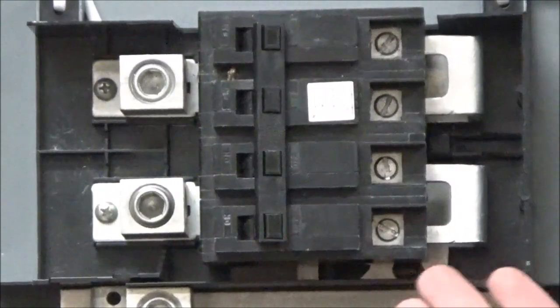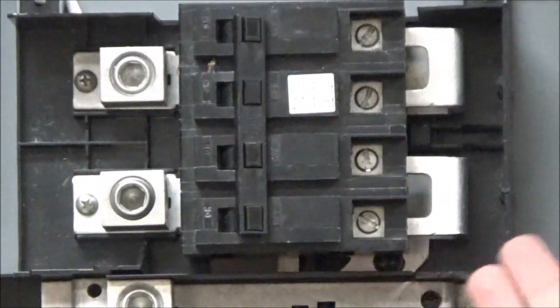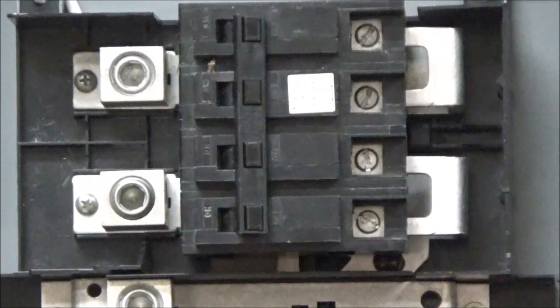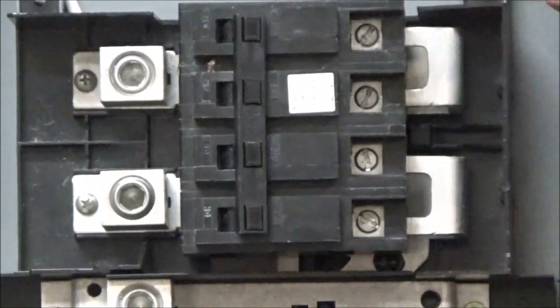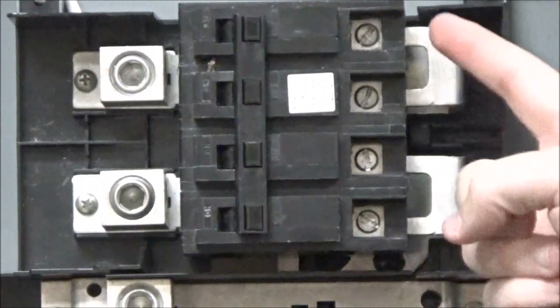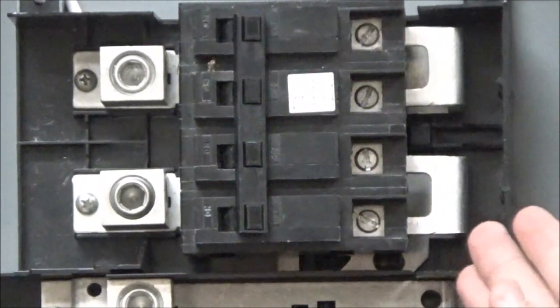This is the older style that is only used as a main breaker. It does not have the BB on the end of the part number. You will see that it does not have a bracket back here with the two screws, but rather has the four screws to attach to the bust bar of the panel.